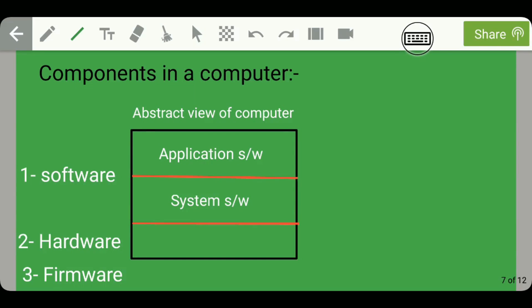Hello guys, welcome to the second lecture of this lecture series on General Studies for IES. Today we will start our discussion with components in a computer. Here is the abstract view of a computer. A computer contains three parts: the first one is software, the second one is hardware, and the third one is firmware.